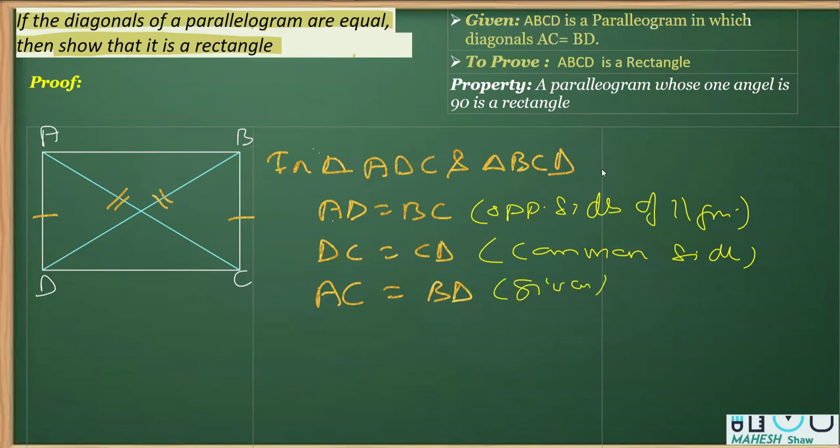So now we can say the triangles are congruent. Therefore, triangle ADC is congruent to triangle BCD. And clearly the reason here is SSS. It is congruent by side, side, side congruency.